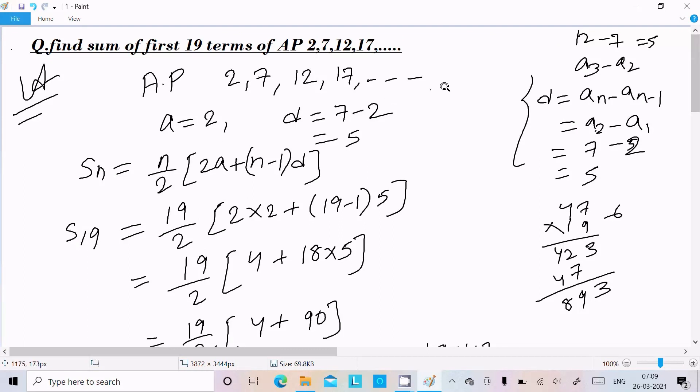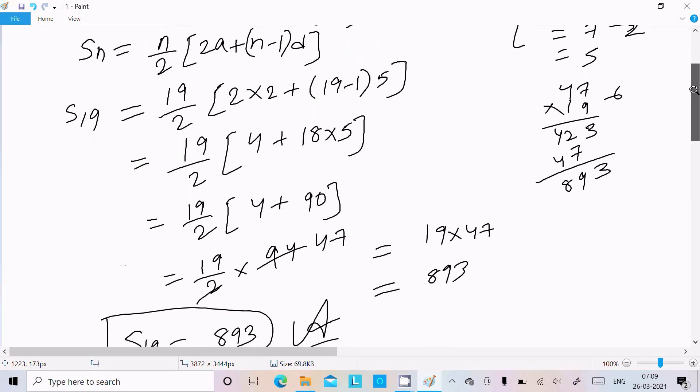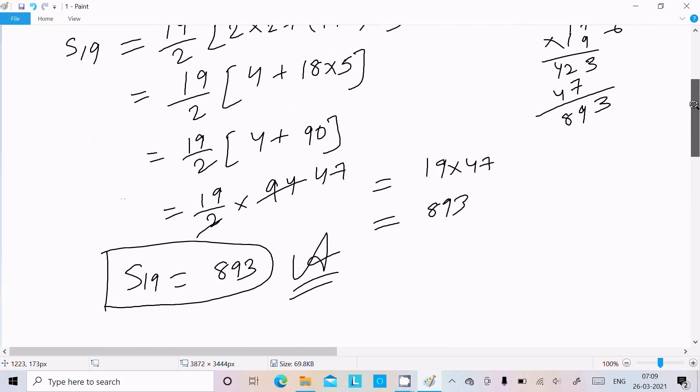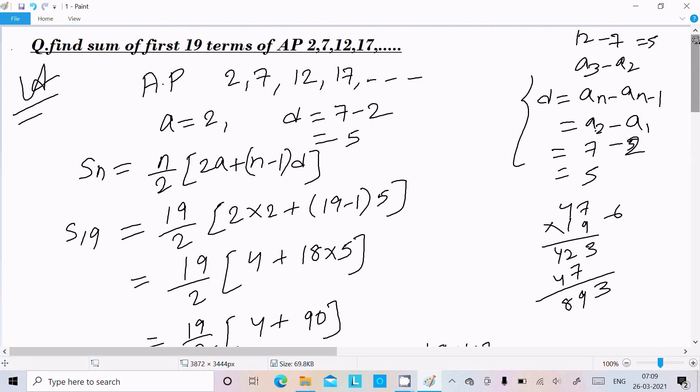So here first you need to identify first term, next is common difference. Use the formula S_n equal to n by 2 times [2a plus (n minus 1) times d]. Now S_19, thereafter you can easily find sum of 19 terms. So I hope guys this video is helpful for you. So now in this video it's over. So thanks for watching. See you next week. Thank you.